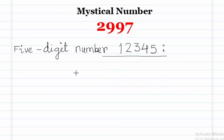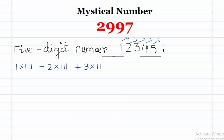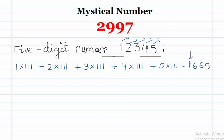Our next example is the five digit number 12345. What are the digits? 1, 2, 3, 4, and 5. If we multiply each digit by 111 and add all of them — 1 into 111 plus 2 into 111 plus 3 into 111 plus 4 into 111 plus 5 into 111 — this equals 1665.